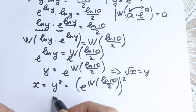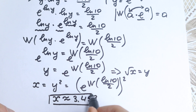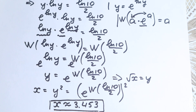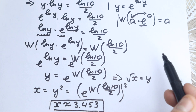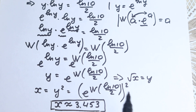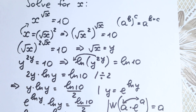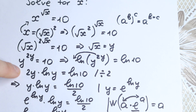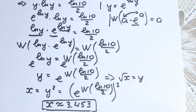The approximate answer is x ≈ 3.453. This was a longer solution but I wanted you to understand each step clearly. As you can see, nothing is too hard — the key steps were: the power/exponent rule, the substitution, and the Lambert W function. If you can set up the a·e^a form, the simplification is straightforward. If you have any questions, write them in the comments. Thank you for your time, have a great day, and see you in the next videos!